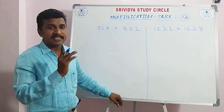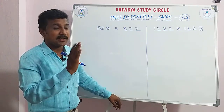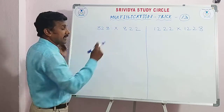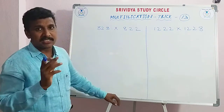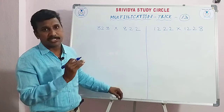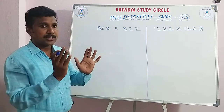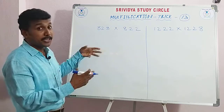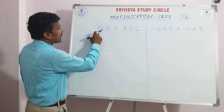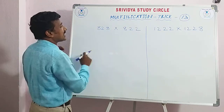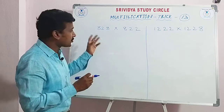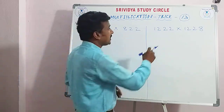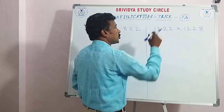Up to now we have discussed two-digit numbers — units place and tens digits. Now this is a little bit advanced. See: 828 into 822 — any three-digit number into any three-digit number. And likewise 1222 into 1228 — any four-digit number into any four-digit number.